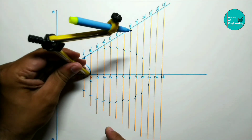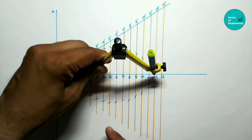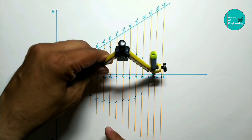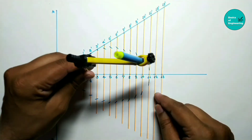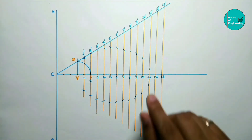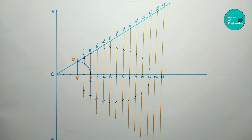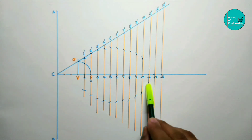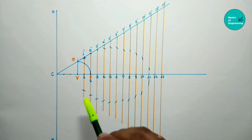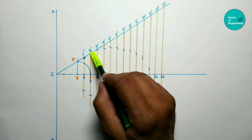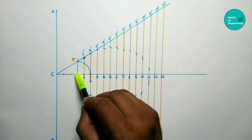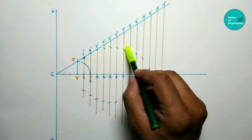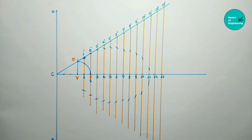If the arc does not cut the line, do not take that point. I will stop here at point number 11 — maybe your last point is at number 12. All these marked intersections are your points of the ellipse. The ellipse passes through all these points.